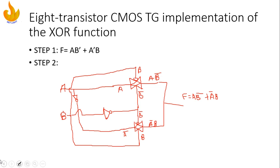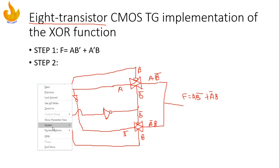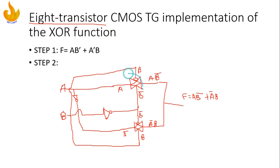This is how we design an XOR gate using eight transistors. The two transmission gates each contain one NMOS and one PMOS — that is two transistors each, giving four transistors total. The two inverters each represent two transistors, adding another four. Therefore, there are eight transistors total, and with these we have designed the XOR function.